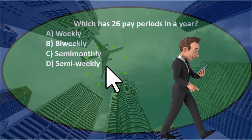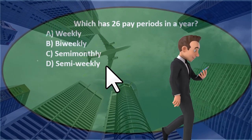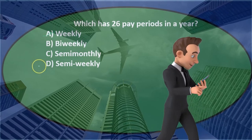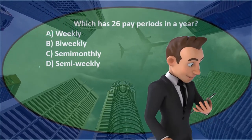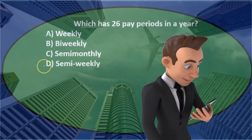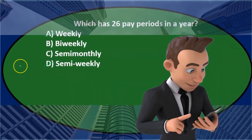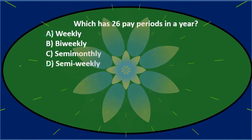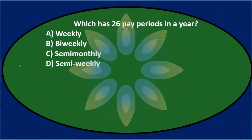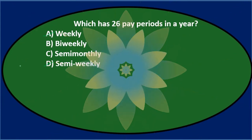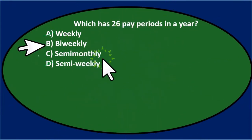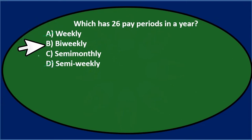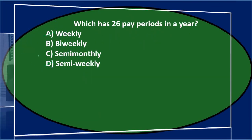D says semi-weekly, which isn't really a pay period — who gets paid in the middle of the week? No one gets paid on Wednesday and Friday. So we'll eliminate that. The question really comes down to B and C: bi-weekly or semi-monthly. This is where most of the confusion lies.